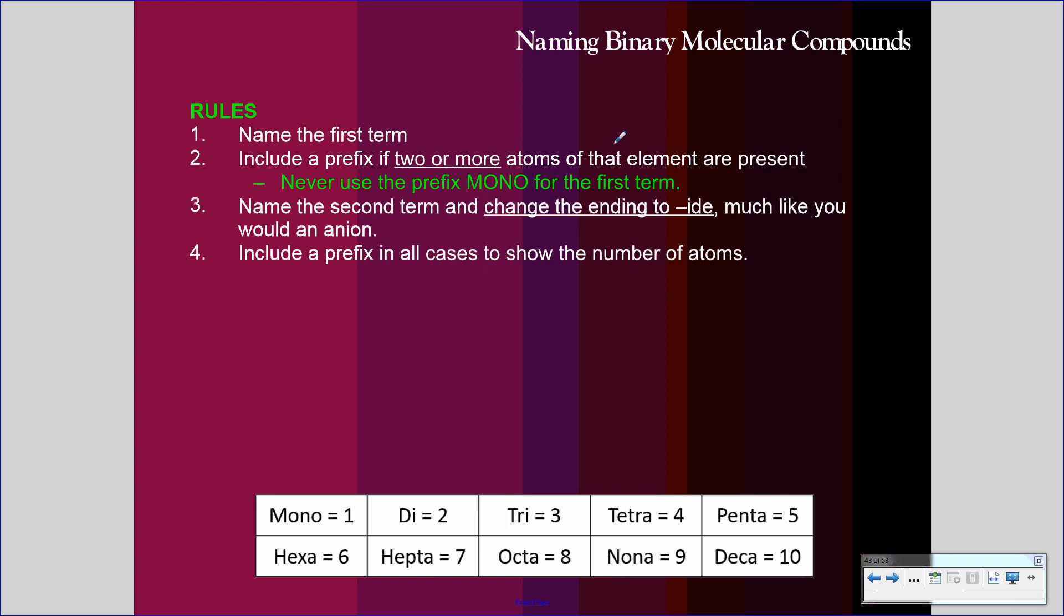When we put the name to a binary molecular compound, we're simply going to take the first term, name it, carbon. Include a prefix if two or more atoms of that element are present. There's no two or more, it's just one. So we'll never use the prefix mono for the first term. Name the second term, change the ending to ide much like you would an anion. So oxygen is oxide. And then include a prefix in all cases to show a number of atoms. Monocarbon, don't need to say mono. Two oxygens, so it's dioxide. Carbon dioxide.